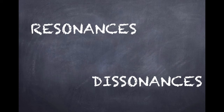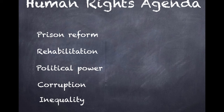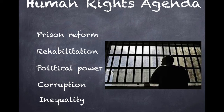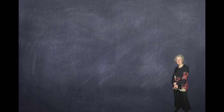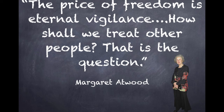When we consider those rubric keywords resonances and dissonances, we see that Hag-Seed is imbued with both. Atwood's version maintains many key elements of Shakespeare's The Tempest, but it is also intertwined with her human rights agenda — specifically prison reform and possibilities of redemption and rehabilitation. This echoes her modern context, and we can see common concerns across her entire body of work, such as political power, corruption and inequality. Atwood quoted John Curran: 'The price of freedom is eternal vigilance. How shall we treat other people? That is the question.' Thus Atwood interweaves these contemporary issues, enhancing the original concerns of the play and providing many rifts and counterpoints throughout.